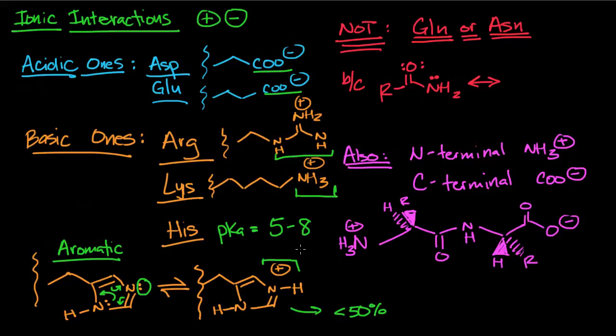It might seem a little weird that we have aspartate and glutamate that are going to be negatively charged but glutamine and asparagine are not going to be charged at physiological pH. The reason behind that is if you remember from chapter 3 when you have an NH2 next to a C=O bond the resulting resonance structure is going to center some negative charge around the oxygen and then you're going to have some positive charge present on the nitrogen.